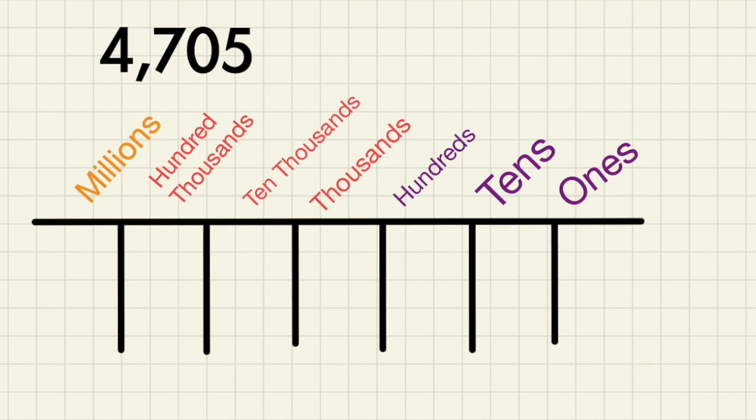Here we have a four digit number and it has 4, 7, 0, 5. Again we start off with the right hand side, so that number 5 would be the ones place. Then the zero would be in the tens place.